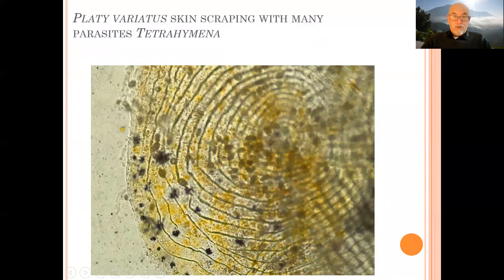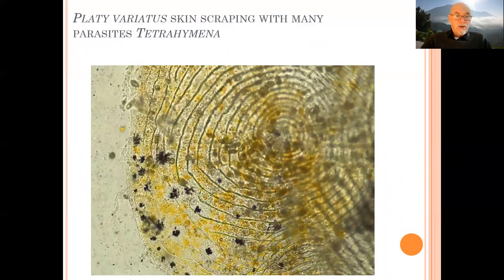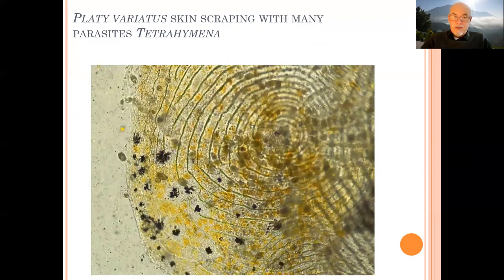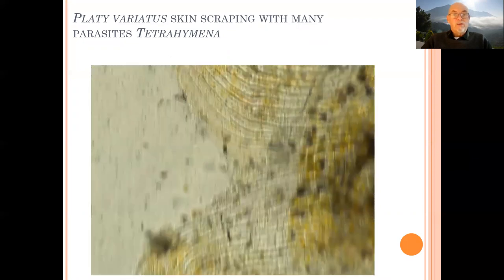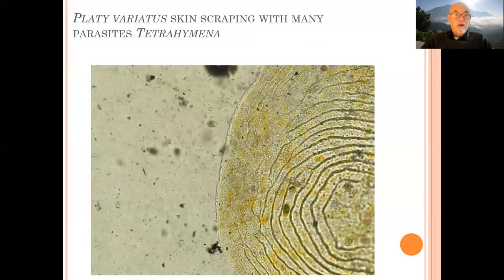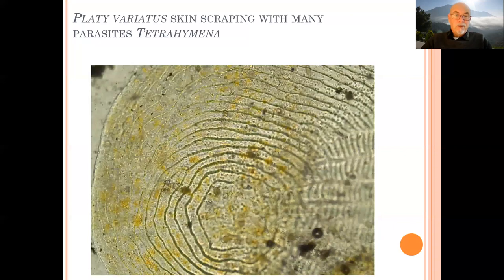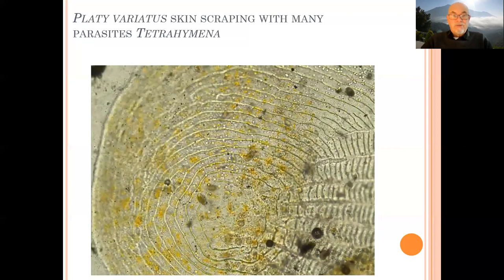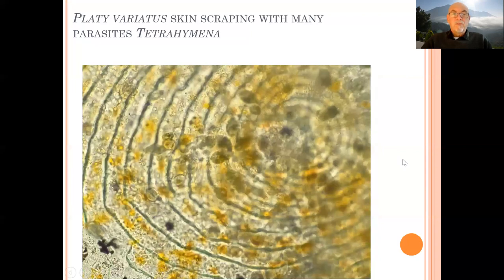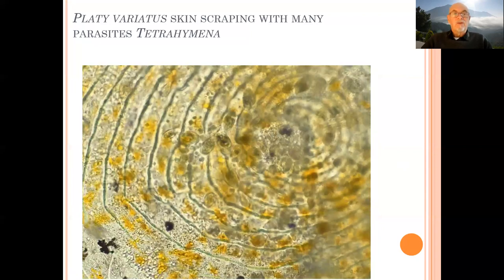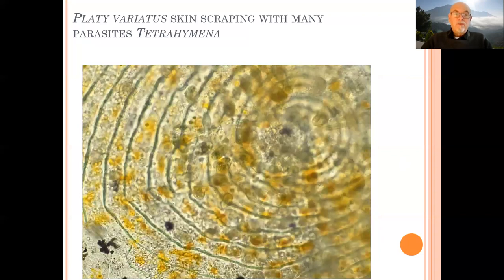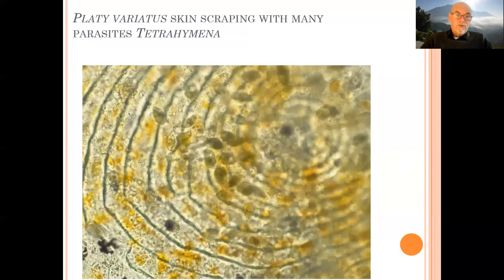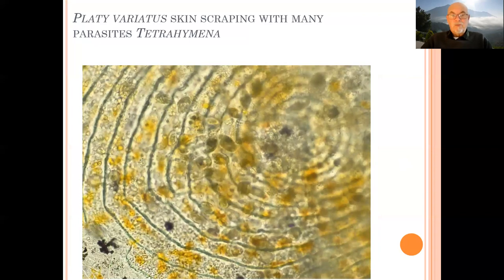What was very obvious — we took a scraping — and you see the many parasites moving on the fish scale. Those parasites are the ciliated protozoa called Tetrahymena, and they can divide very rapidly. They can invade all over the body of the fish. Here at a higher magnification you see they're moving around, they're damaging the mucus of the fin, the skin of the fin, they're damaging the scales.